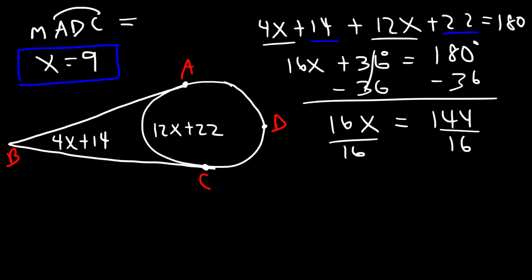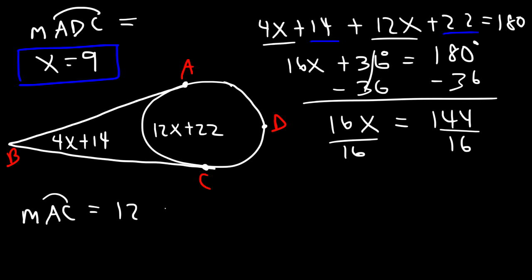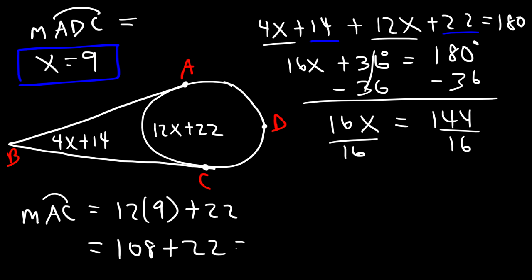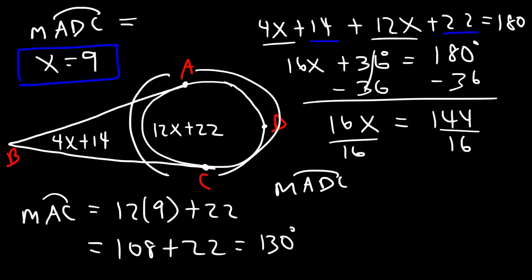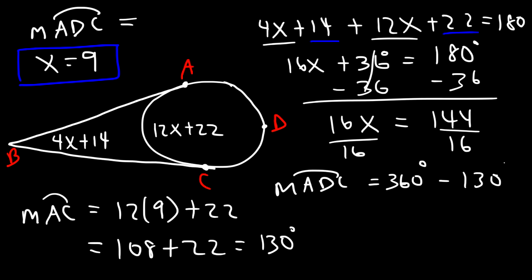Now that we have x equals 9, we can calculate the arcs. The minor arc AC is 12x plus 22, which is 12 times 9 plus 22. That's 108 plus 22, equals 130. To find the major arc ADC, note that the major arc plus the minor arc adds up to 360. So the major arc ADC is 360 minus 130, which is 230 degrees.